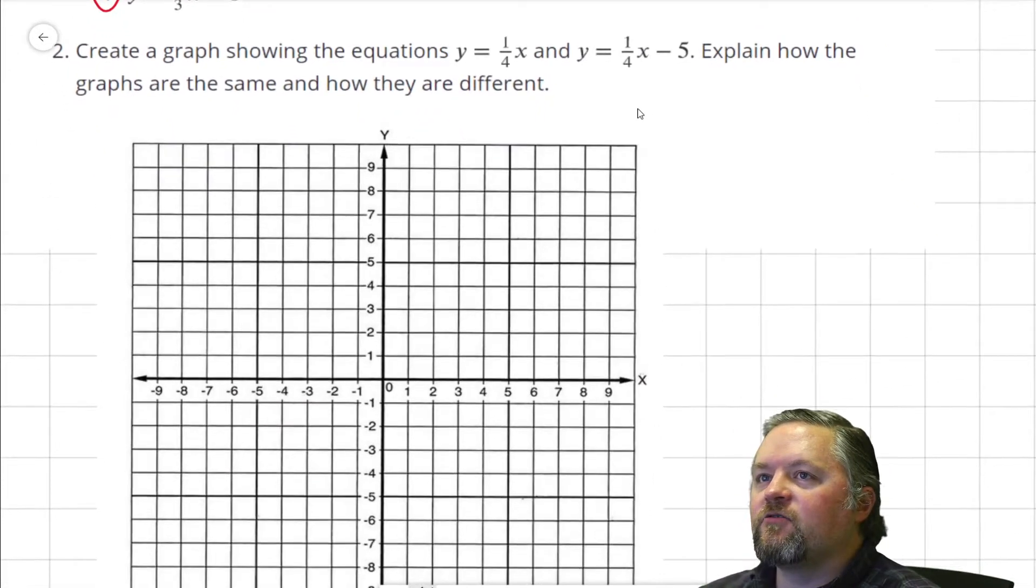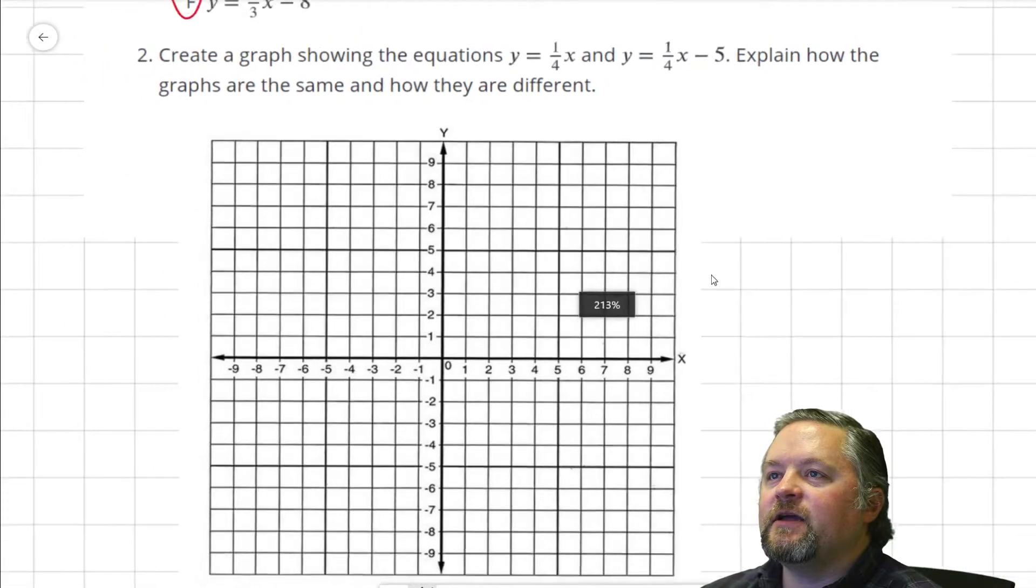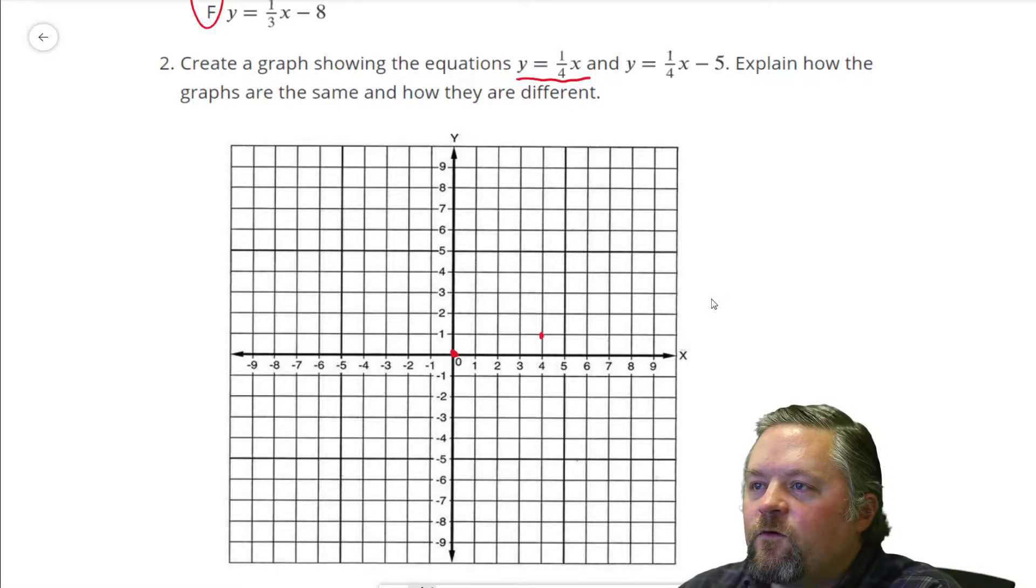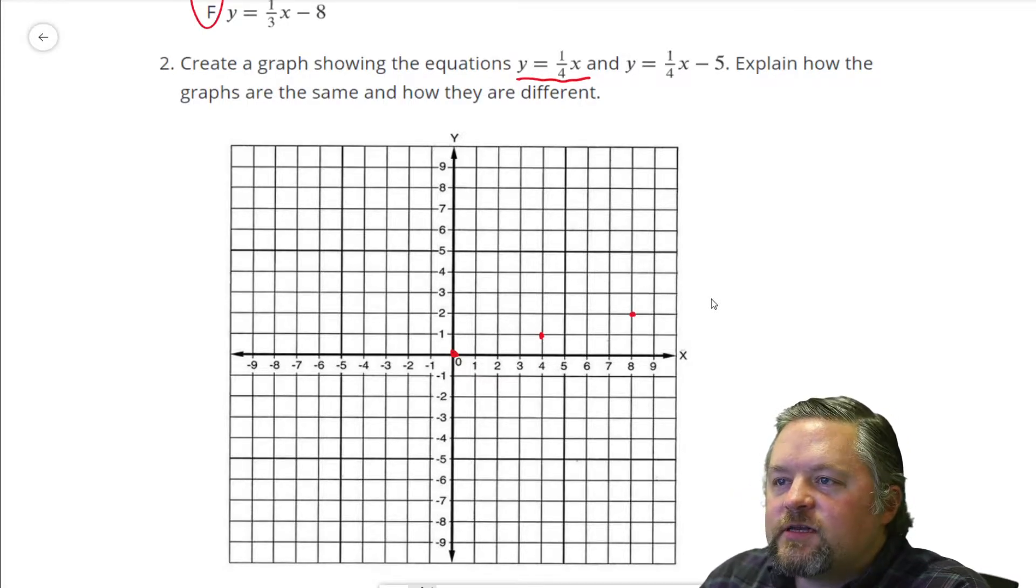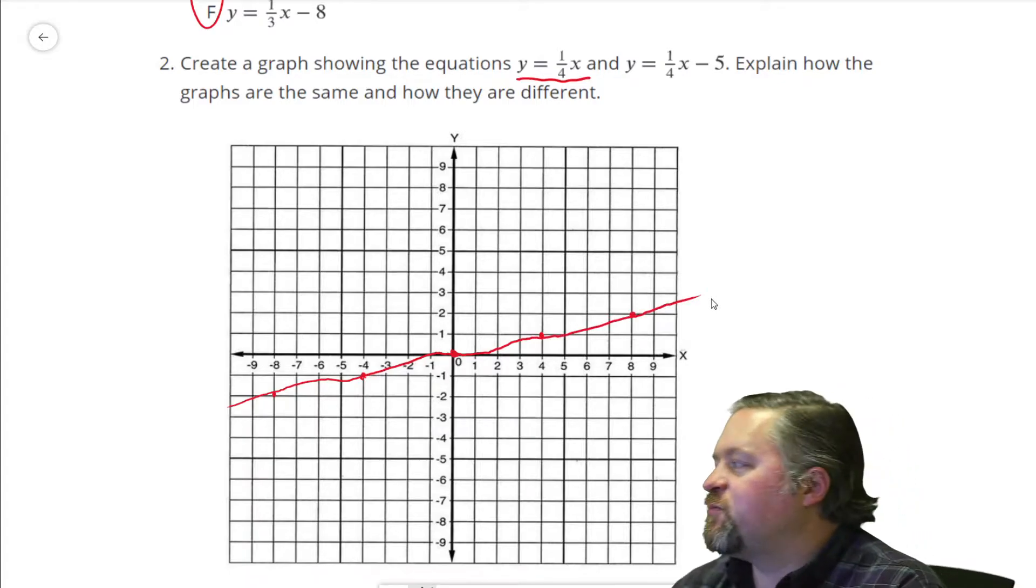Okay, next, create a graph showing the equations y equals 1/4 x and y equals 1/4 x minus 5. Explain how the graphs are the same and how they are different. Okay, the first one, no y-intercept, starts at, we'll use red for this one, starts at 0, 0. Slope is 1/4, up 1 over 4, up 1 over 4. Going backwards, down 1 over 4. Down 1 over 4.